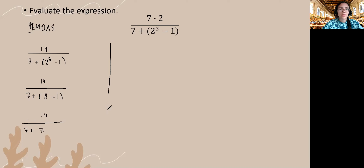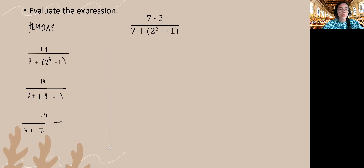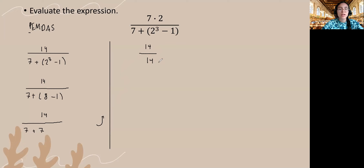Now I'll work back up here. So 7 plus 7 will give me 14 in the denominator. So I have 14 divided by 14, and I divide — this gives me 1.